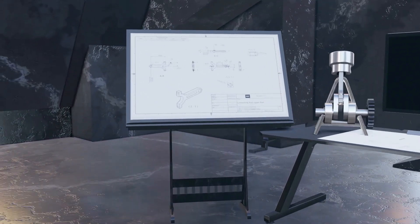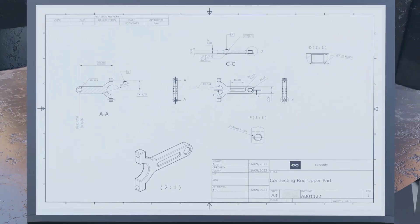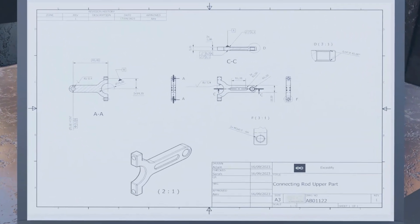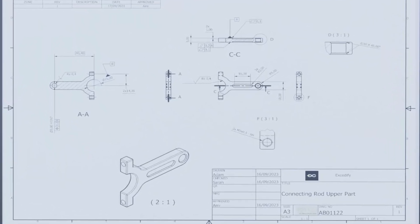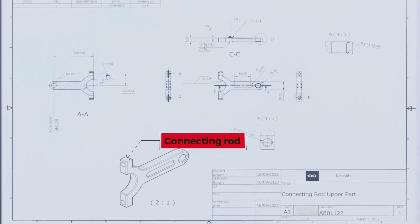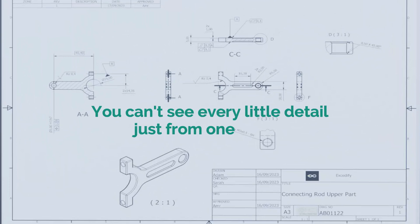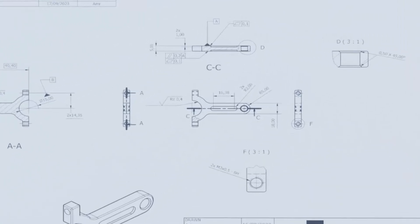Imagine that you've got a technical drawing laid out in front of you. It's detailing some complex piece of machinery, like our connecting rod. Now you know how sometimes you can't see every little detail just from one angle? That's where hidden lines come into play.